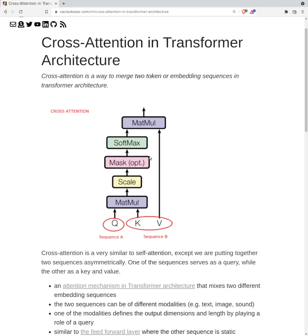Cross attention in transformer architecture. Cross attention is a way of merging two token embedding sequences in a transformer architecture.